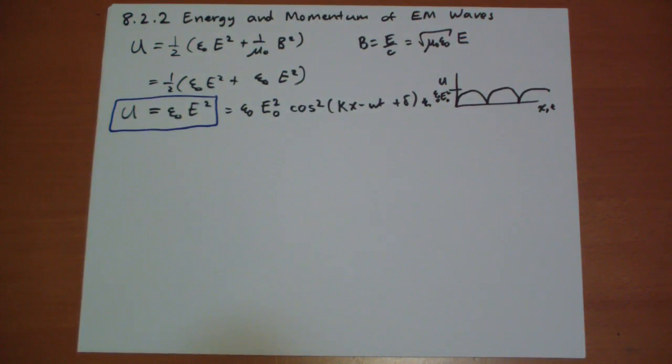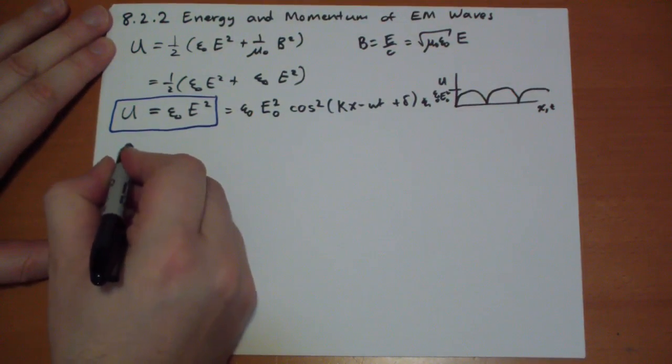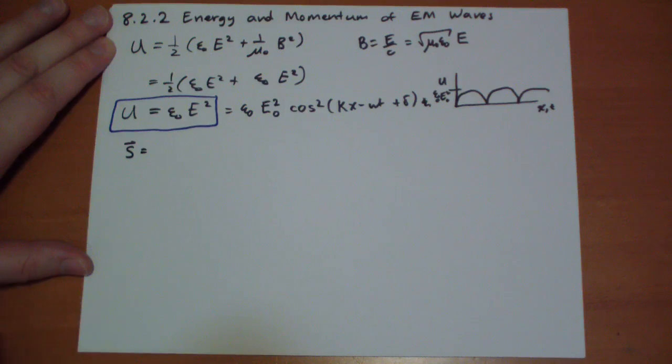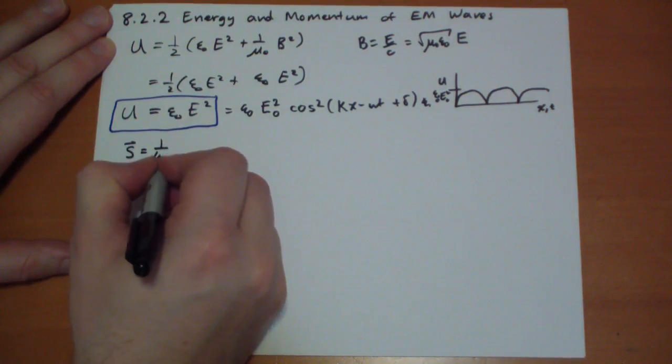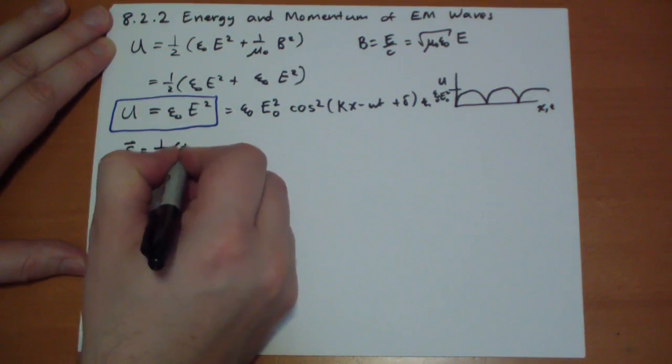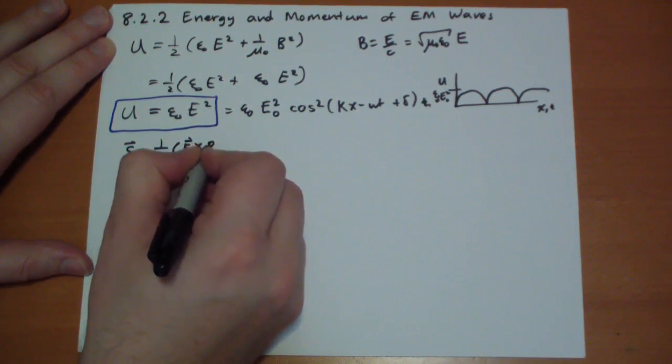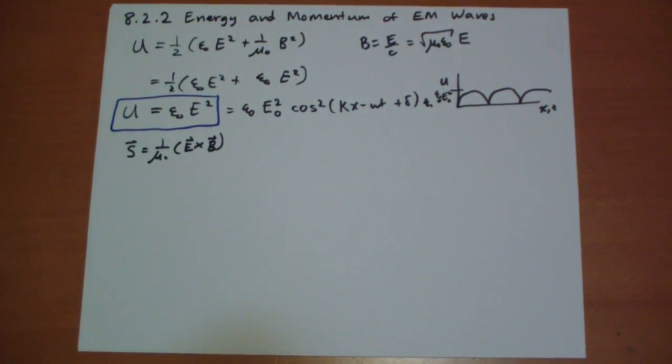Okay, next we have energy flux density, the Poynting vector. So S vector equals 1 over mu-naught, I remember a previous video where I forgot that factor and everything was stupid, E cross B. Okay, so the energy flux density, the Poynting vector represents the energy flux density, the rate of energy passing through a surface at any given point in time. So E cross B, what does that look like?